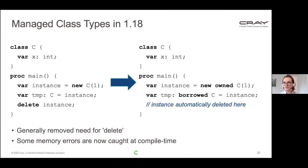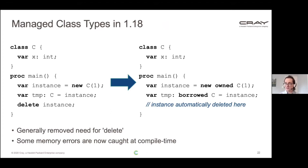In that same 1.18 release we also switched to managed class types. The code you could have written in 1.17 used new on a class and you just had to delete it later. In 1.18, we changed it so that you'd say new owned, new shared, or new unmanaged — and if you say new owned, the compiler adds the code to delete your class instance. That was great because it generally removed the need for delete and allowed the compiler to catch certain memory errors at compile time, but it caused a lot of disruption in code.